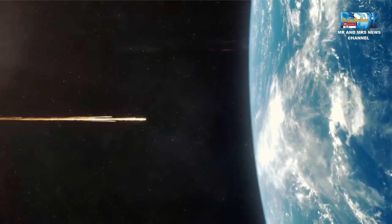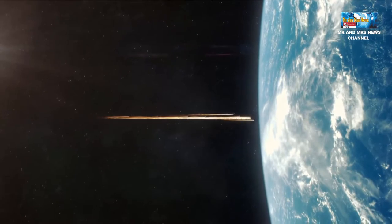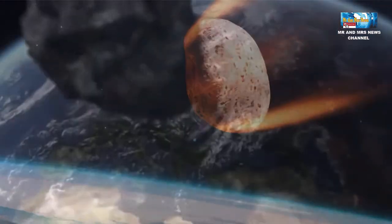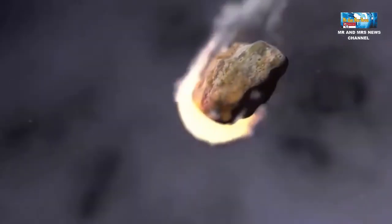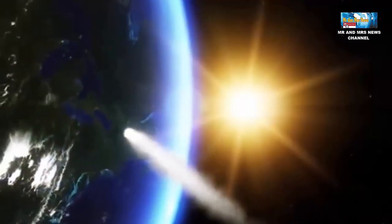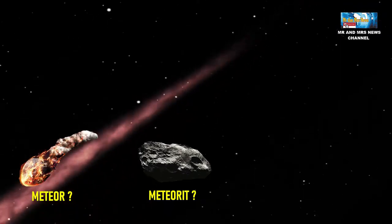Meteor adalah batu yang melayang-layang di luar angkasa. Selain dijuluki sebagai meteor, batu-batu ini ternyata punya julukan lain loh, tergantung kondisi tempatnya. Batu-batu ini juga bisa dipanggil sebagai meteorit dan meteoroid. Lalu, apa perbedaan meteor, meteorit, dan meteoroid?